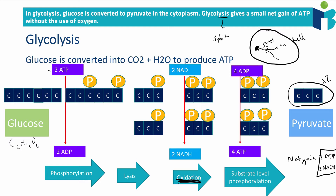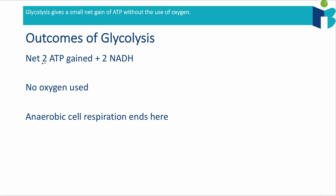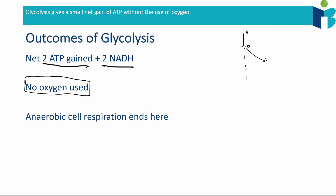You also have a net gain of two NADH, which is useful because we're going to use these compounds in later processes. So the outcomes of glycolysis are: two ATP molecules gained and two NADH molecules. We do not use any oxygen, which is why it's the common process in both aerobic and anaerobic cell respiration. In anaerobic cell respiration, the process kind of ends here — glucose turns into pyruvate and that's it for ATP production. For aerobic cell respiration, there are a couple more steps which will produce a lot more ATP.